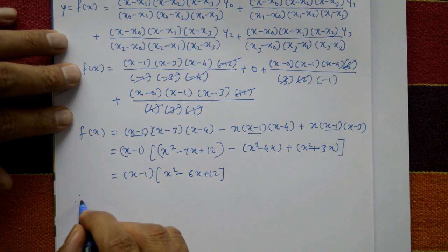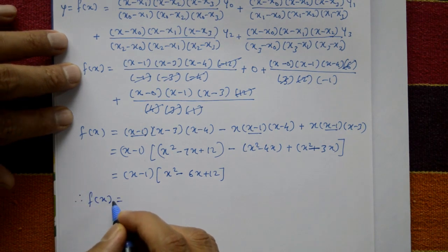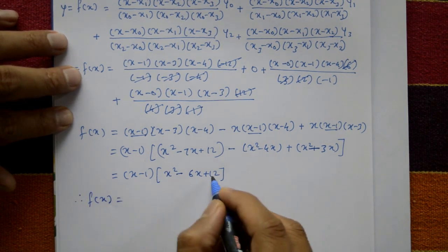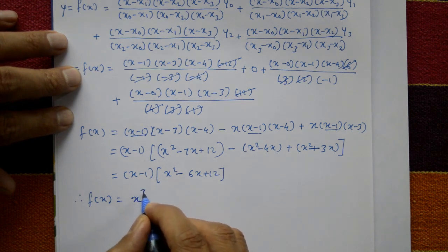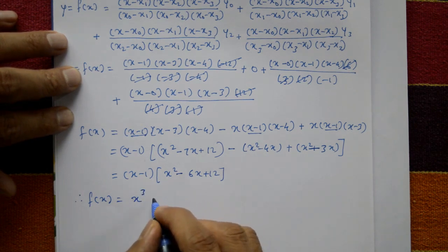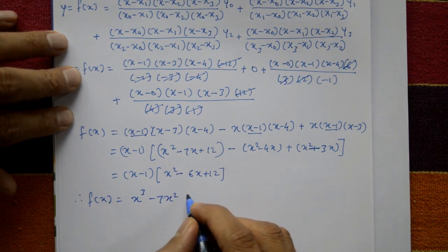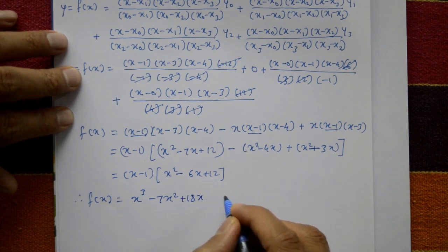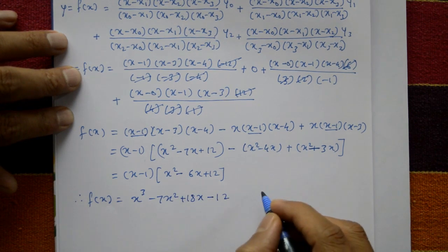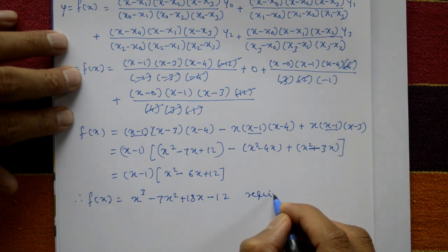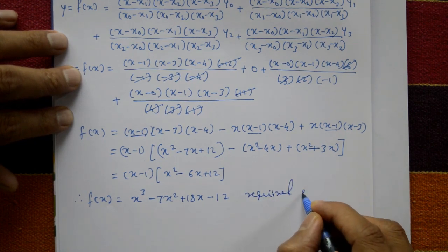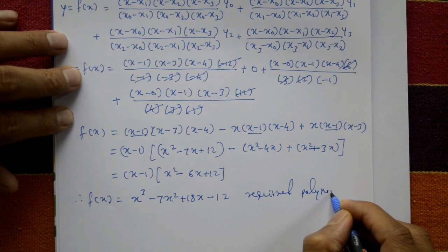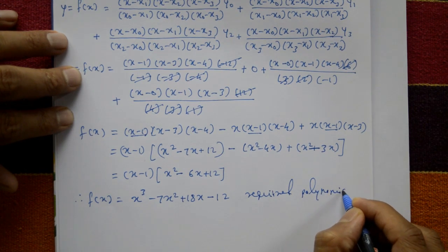Opening the bracket to simplify: x squared minus 6x plus 12. Therefore f(x) equals, opening the square bracket, we get x cubed minus 7x squared plus 18x minus 12. This is the required polynomial.